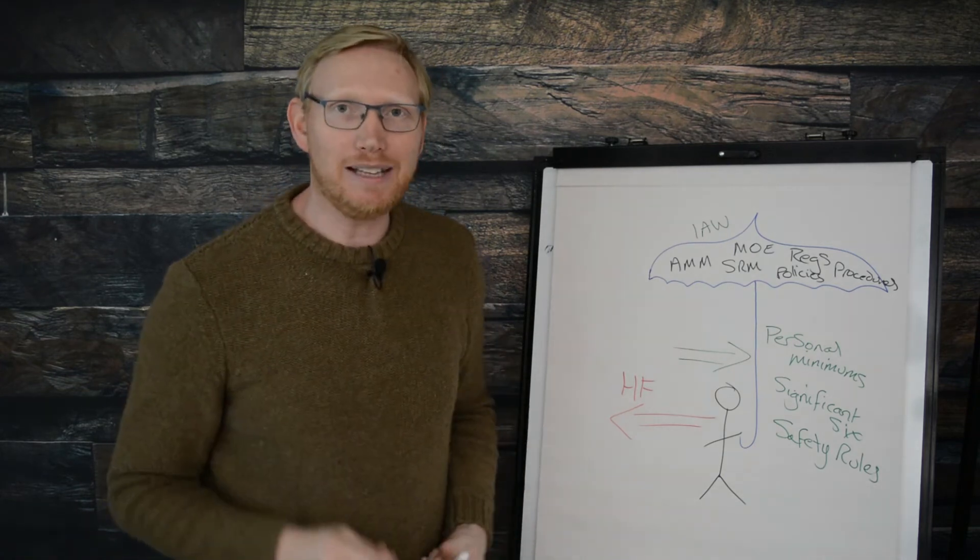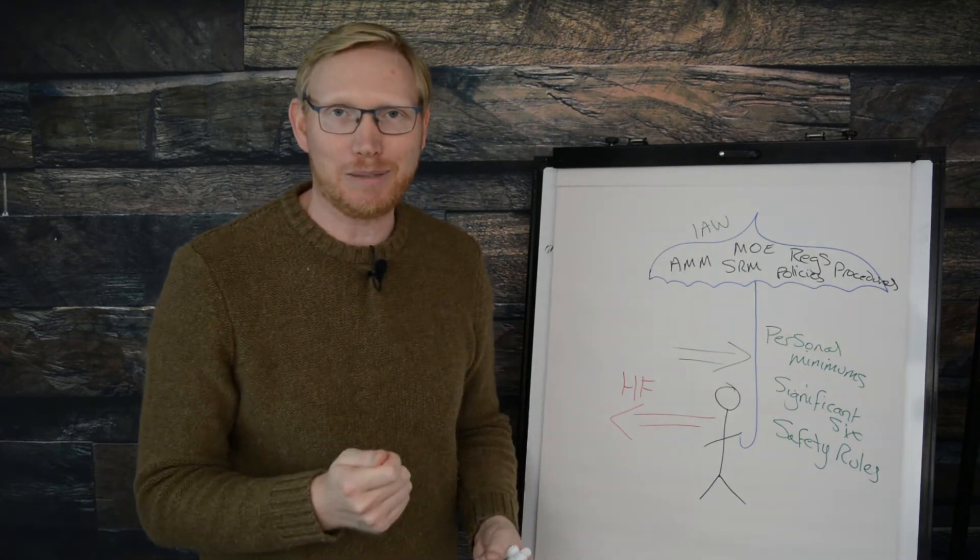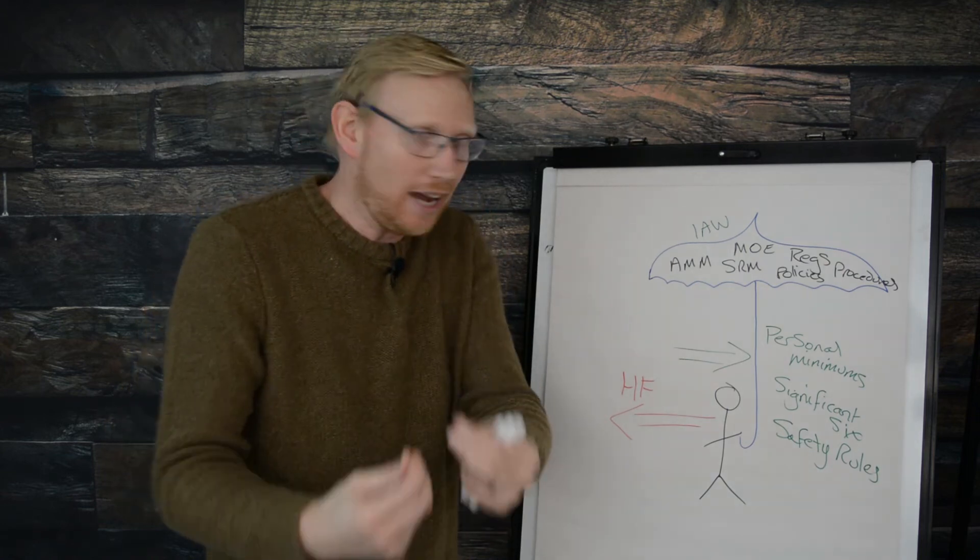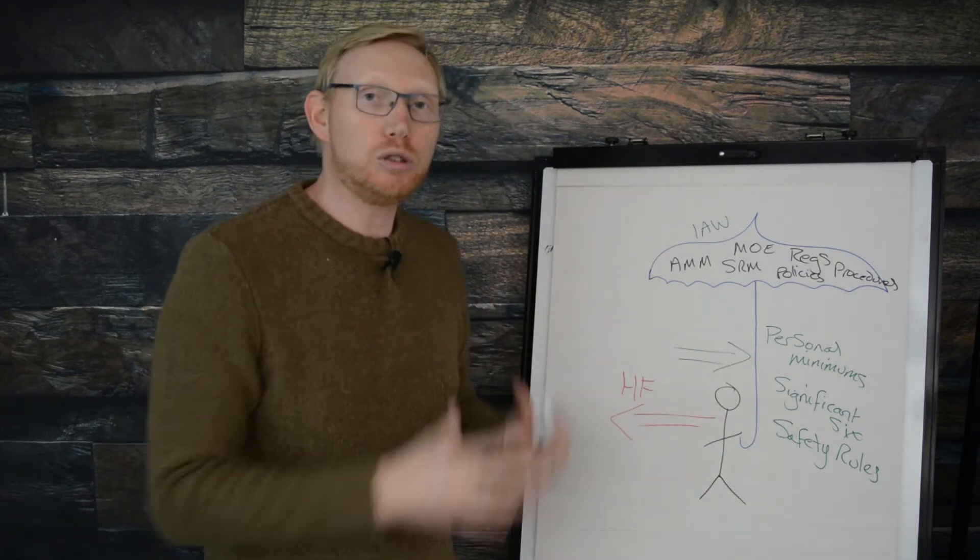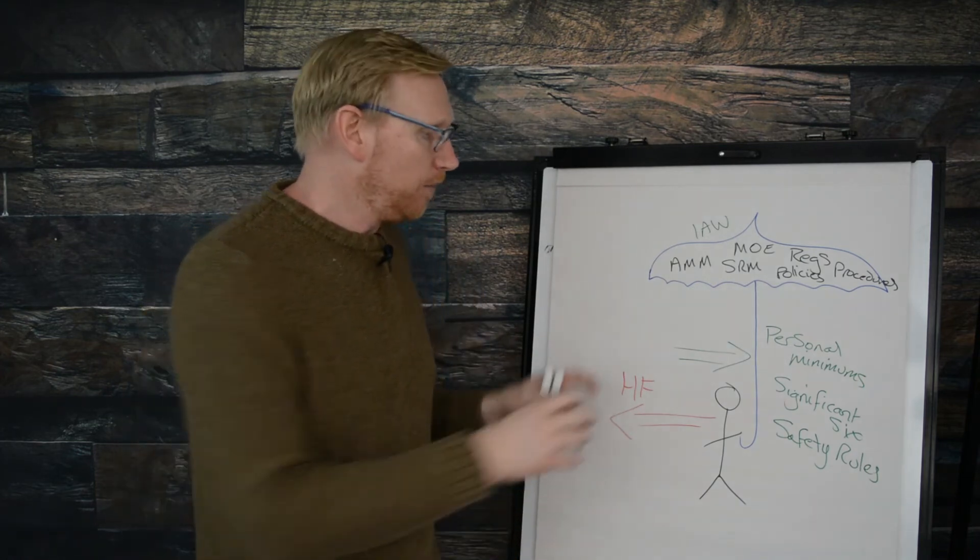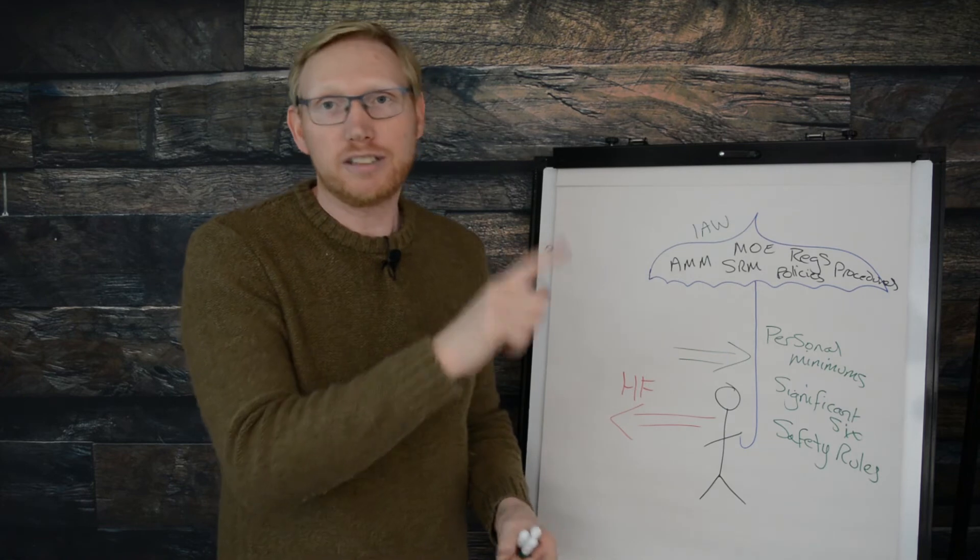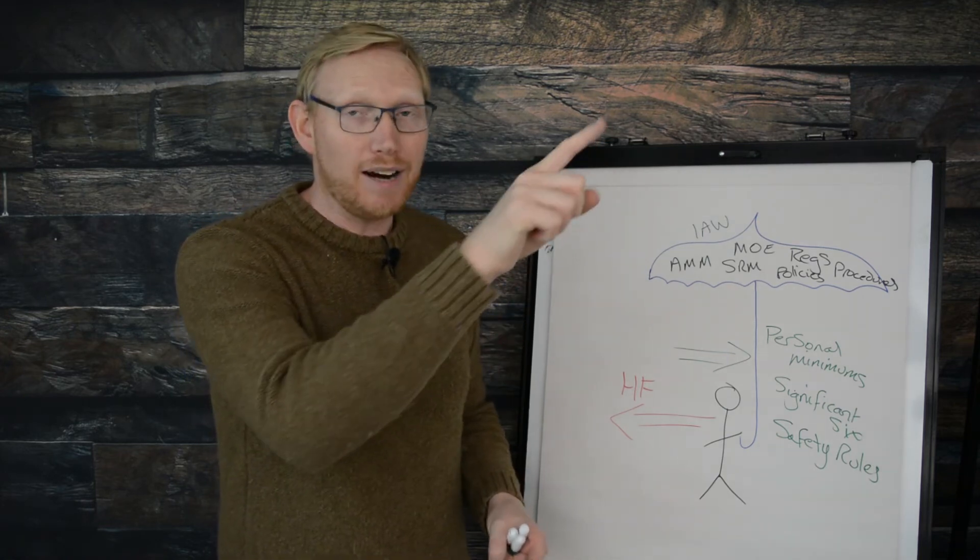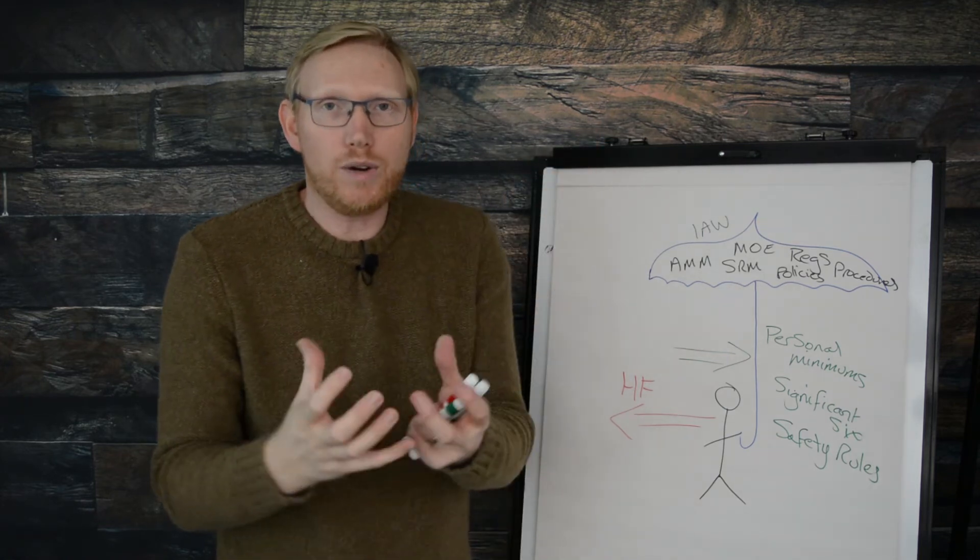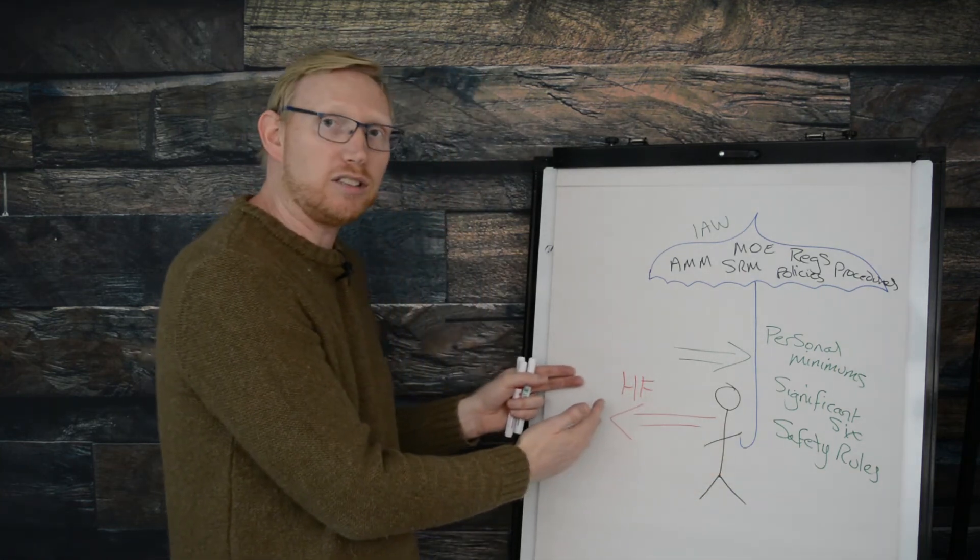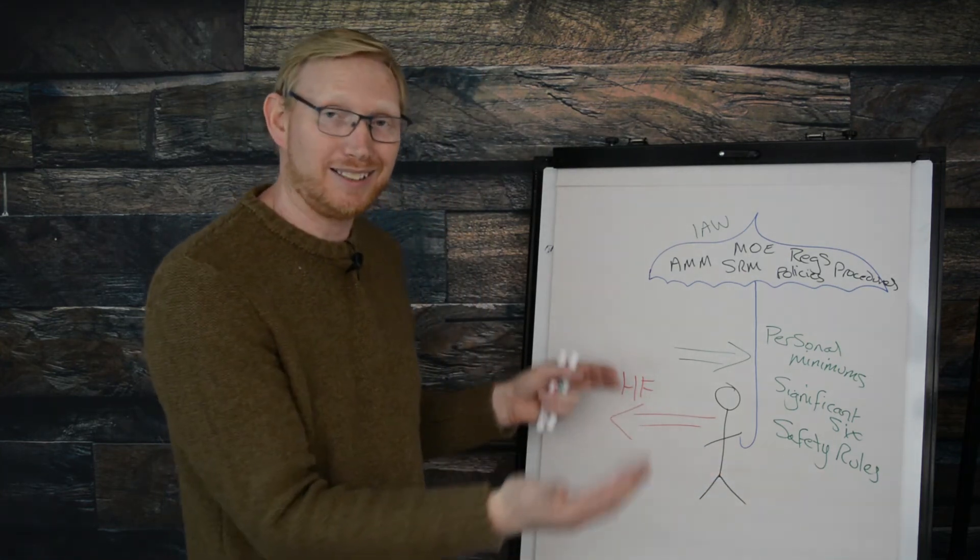What does it mean to this person who's being influenced negatively by human factors? Actually, this is what it means. Not only do they have their personal minimums and the standards and the values that they as an individual care for or you care for, but actually the safety rules for this particular organization, that person can look at those safety rules and say, actually, I'm just about to break one of these safety rules that we own as an organization. And if they're breaking that, it's stepping outside of this umbrella or they're setting themselves up to step outside the umbrella.